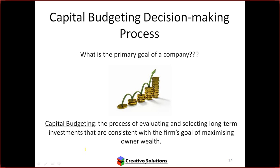I want to start off with a general question. I want you to think about the primary goal of a company, and I want you to write down as many points as you can that actually affect the goal of that company. So if the primary goal of a company is X, what do we need to do to achieve that? Think about the primary goal first and then think about an example that helps us achieve that goal.